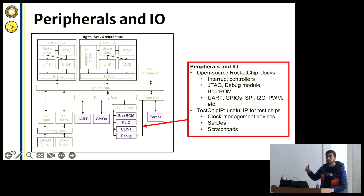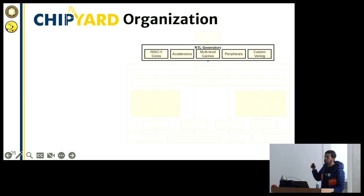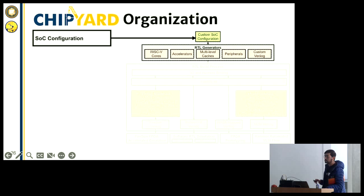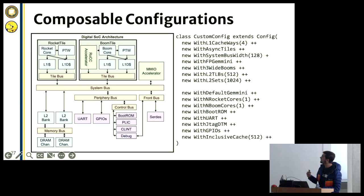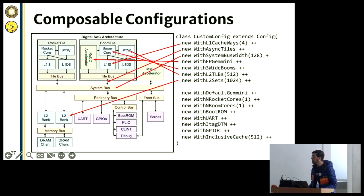We additionally have some ChipYard-unique things like scratchpads that you can also integrate — all available and open source. Now, how do we actually configure all this? There are a lot of different blocks connecting together in complex ways. This is what we call our configuration system, based off of RocketChip's config system. You specify a single class inside this Scala/Chisel world and it basically configures everything you might want to do inside the SOC — modifying the L1, adding accelerators, adding them to particular cores, changing the bus hierarchy, and much more.